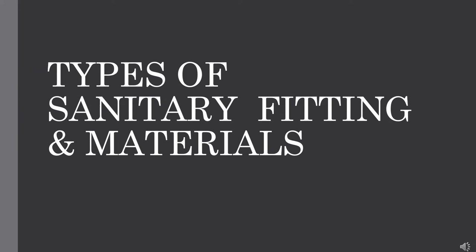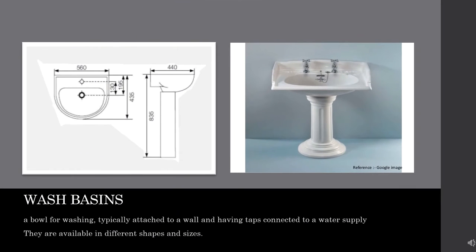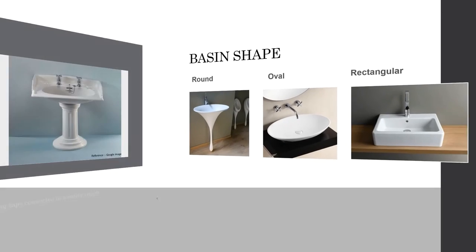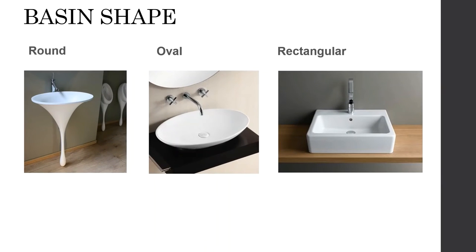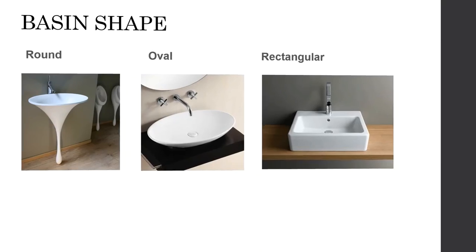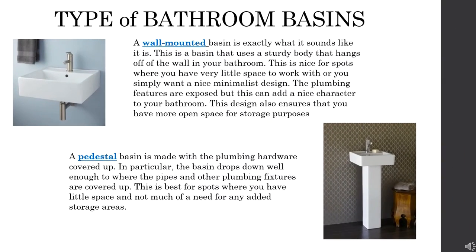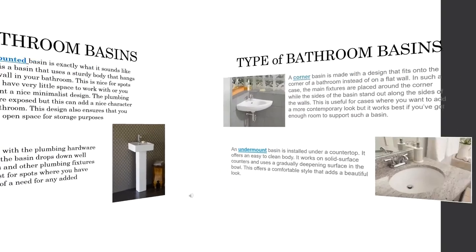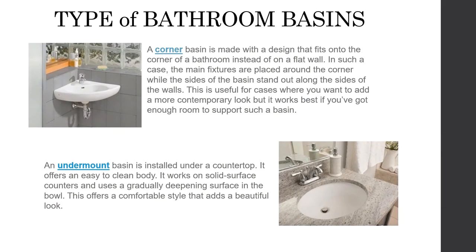The next session is about the types of sanitary fittings and materials. A wash basin is a bowl for washing, typically attached to a wall and having taps connected to a water supply. There are several types of bathroom basins such as a wall-mounted basin, a pedestal basin, a corner basin, an undermount basin, and a tabletop basin.